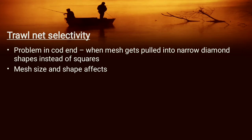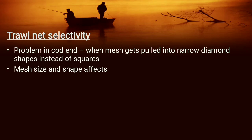The gill net equation is different from the trawl net selectivity equation. For trawl net selectivity, the problem in the codend is that when the mesh gets pulled into a narrow diamond shape instead of square, the capture of undesirable species is increased. This mainly causes problems for environmentalists and fishermen, as the aim is to reduce bycatch. To solve the problem, bycatch reduction grids or square mesh panels are used in the trawl net, which allows certain species to escape while retaining others. Mesh size and shape effects determine the selectivity of the trawl net.